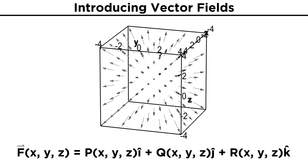In three dimensions, our vector field could look like this: f(x, y, z) = p(x, y, z)i + q(x, y, z)j + r(x, y, z)k.